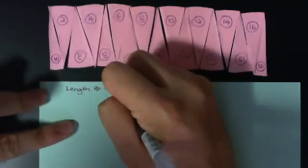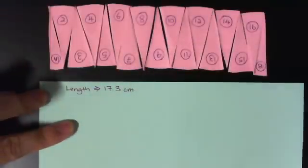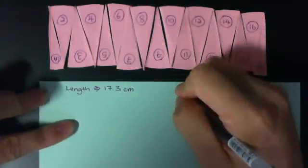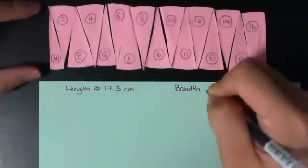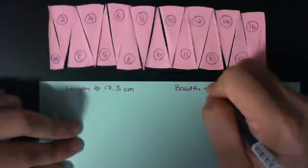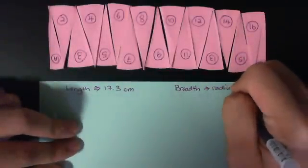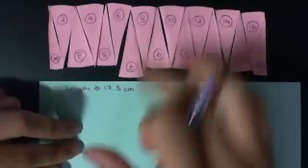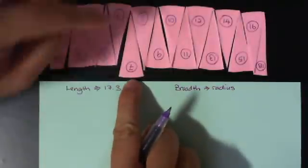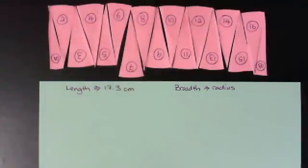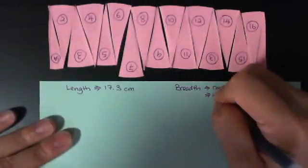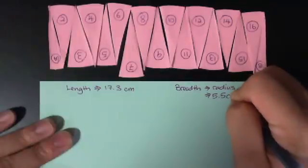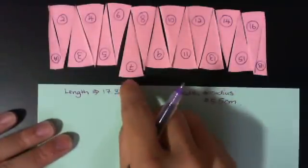How about the breadth? We know the breadth, which is here, is actually the same as the radius. Okay, because this is one part of the circle, and from the circumference to the center of the circle, it is exactly the same as the radius. The breadth, I told you earlier, is actually 5.5 cm.